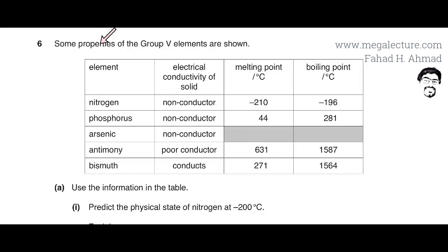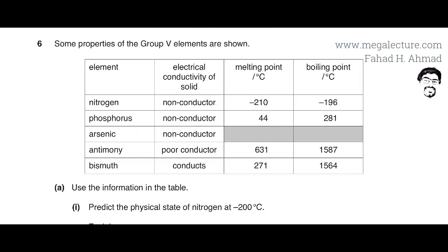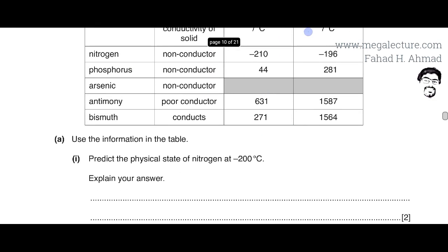The question shows some properties of group 5 elements: nitrogen, phosphorus, arsenic, antimony, and bismuth. Their properties — melting points, boiling points, and electrical conductivity — are given in a table. We need to use the information in the table to predict the physical state of nitrogen at minus 200 degrees centigrade.